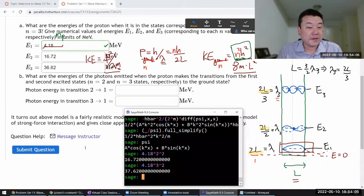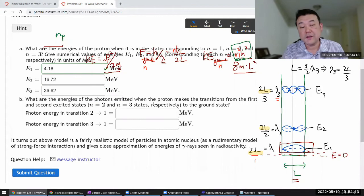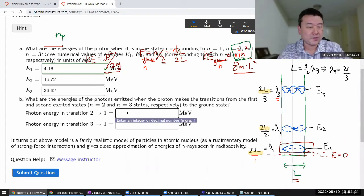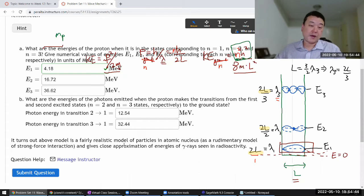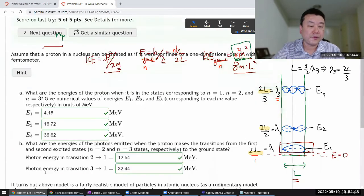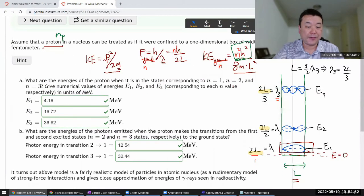Okay, what are the energies of the photons emitted when the proton makes the transitions from the first and second excited state? So it's just asking for difference in energy. The photon will carry away the difference in energy. So for this transition it'll be 12.54. I think I'm trying to do the subtraction in my head. This one should be 32.44. These are super high energies. I think even for gamma ray photons these are pretty high energy, almost unrealistically high even though it says fairly realistic within an order of magnitude. I think that's what they mean.